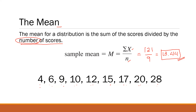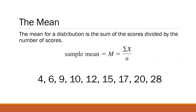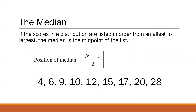Also, the mean is affected by outliers or extreme values. For example, our mean is 13.44, but 13 is very far from 4, and 13 is far from 28. Yes, there are values close to 13 like 10, 12, 15, and 17, but 13 is not close to the extreme values, so it's easily affected by them. So alternatively, statisticians also determine the median, which is a good alternative for the mean.